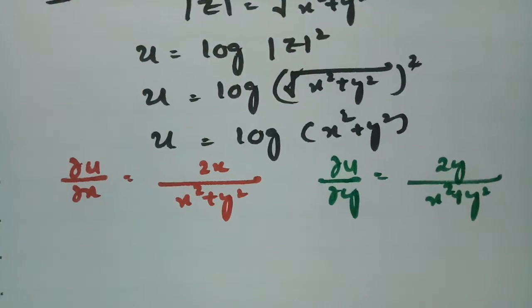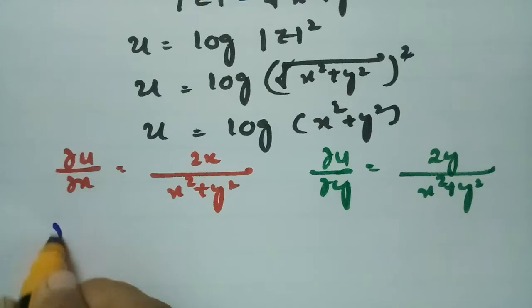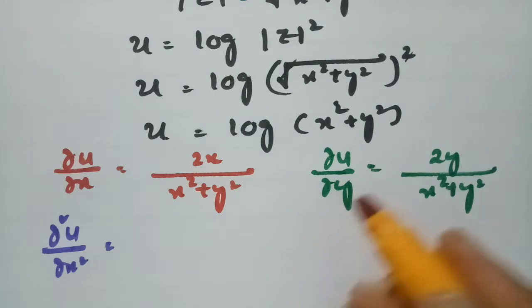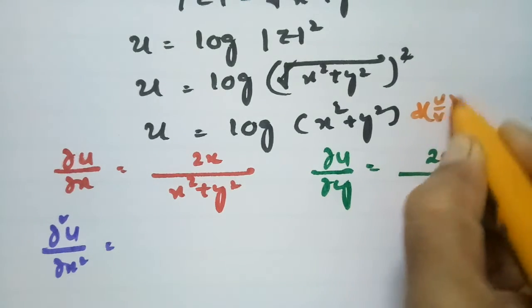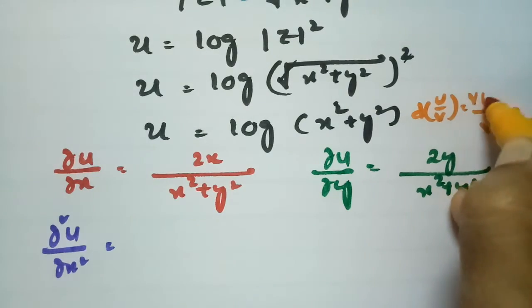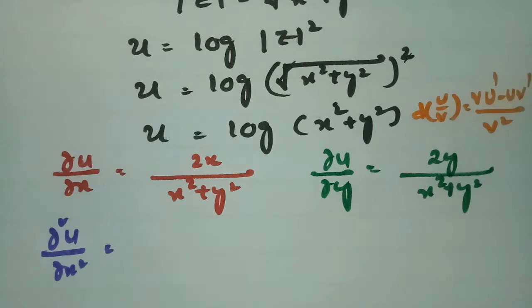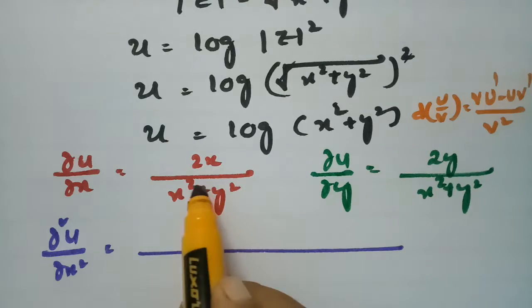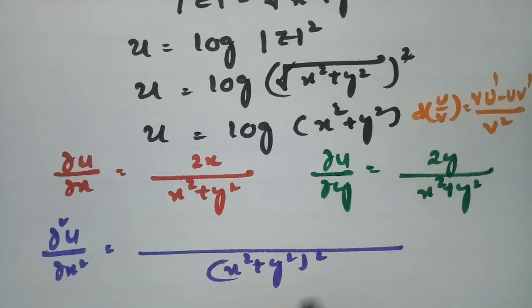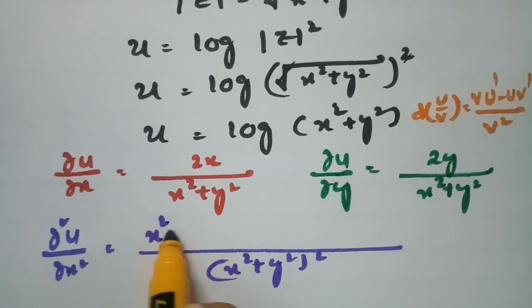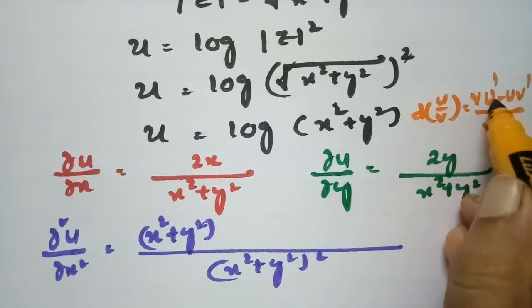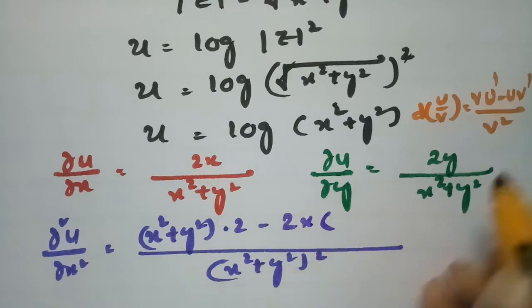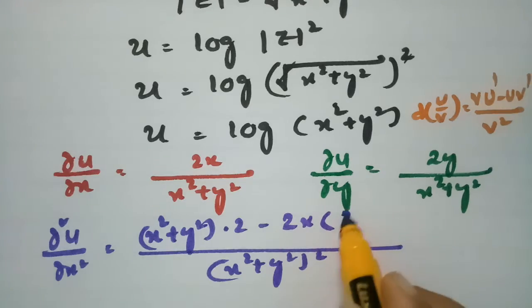Now I have to make the second derivative with respect to x. For ∂²u/∂x², I am going to use the quotient rule. The derivative of u/v is (v·u' - u·v') / v². So the denominator v = (x² + y²), and applying the formula: the denominator becomes (x² + y²)², and numerator is (x² + y²)·2 - 2x·2x.